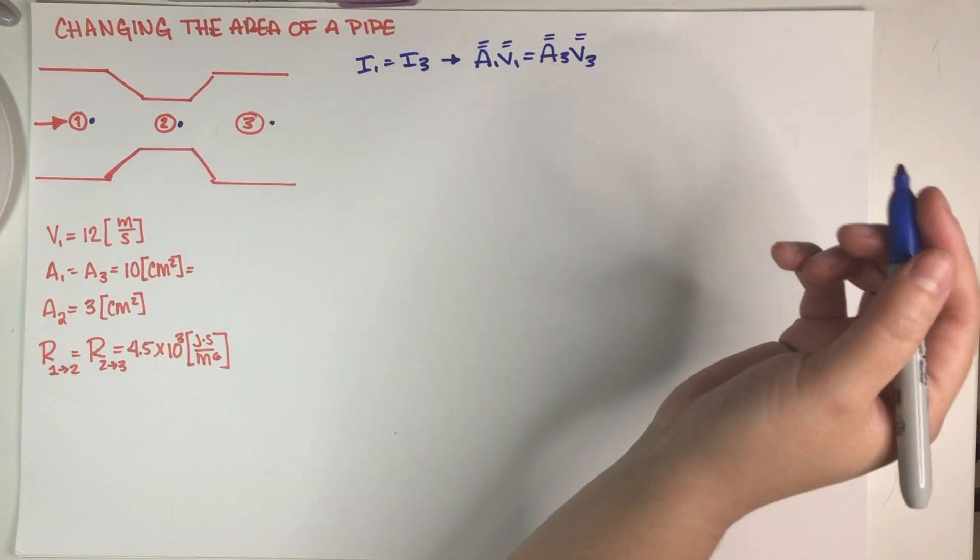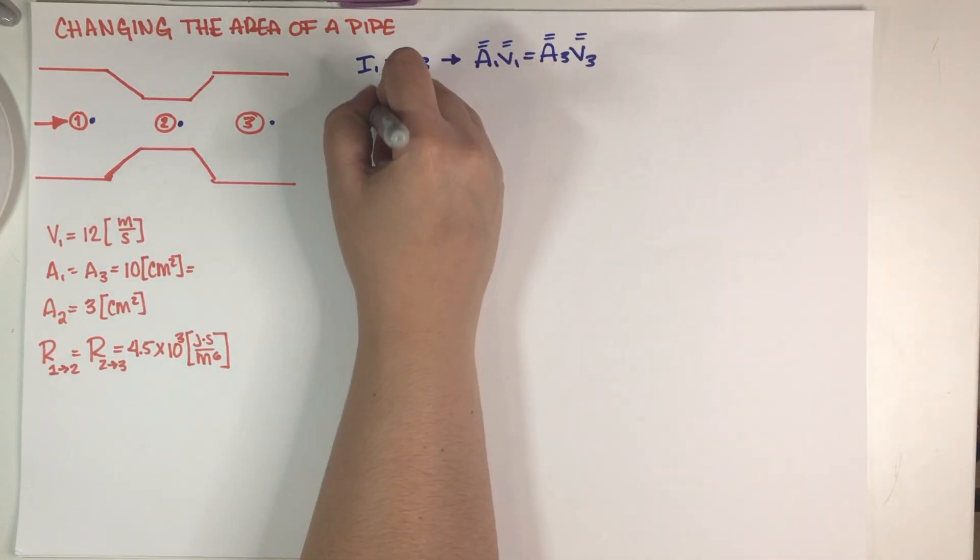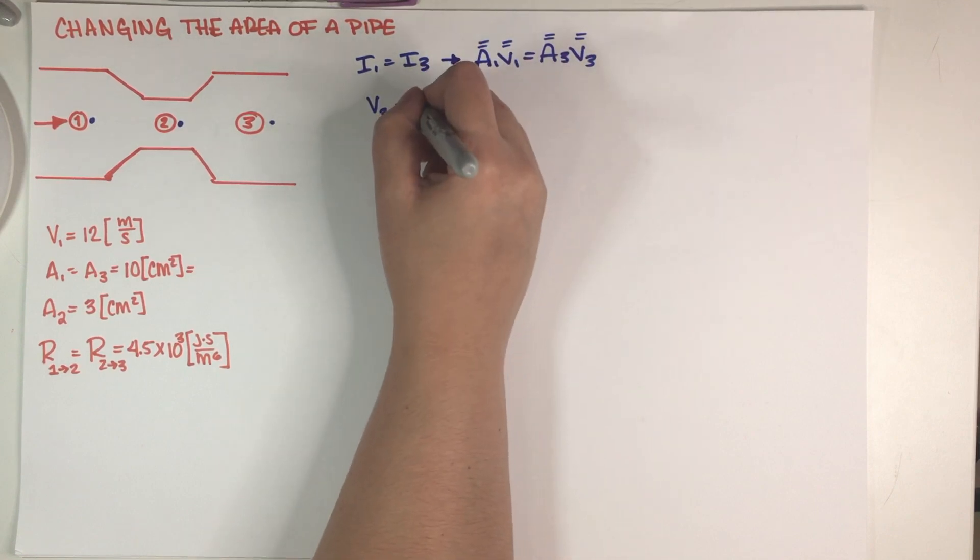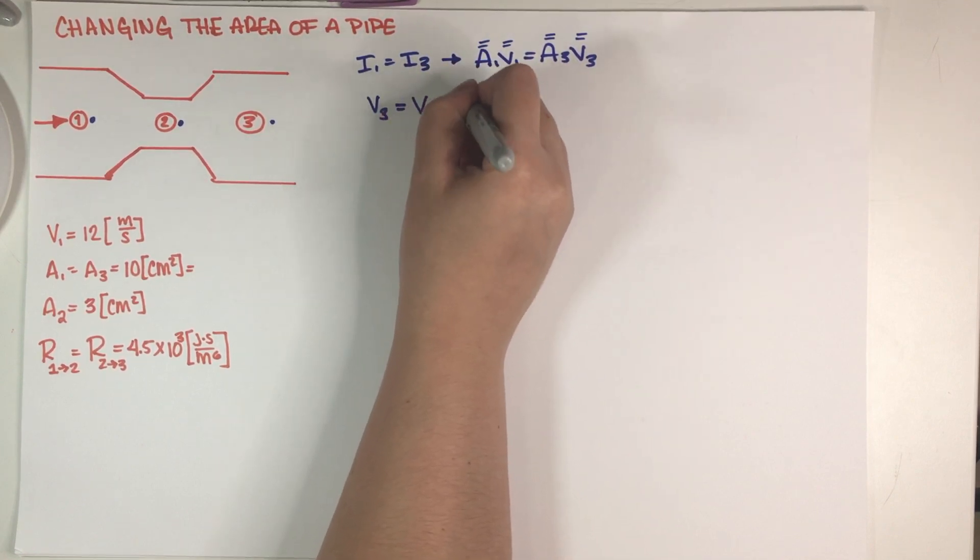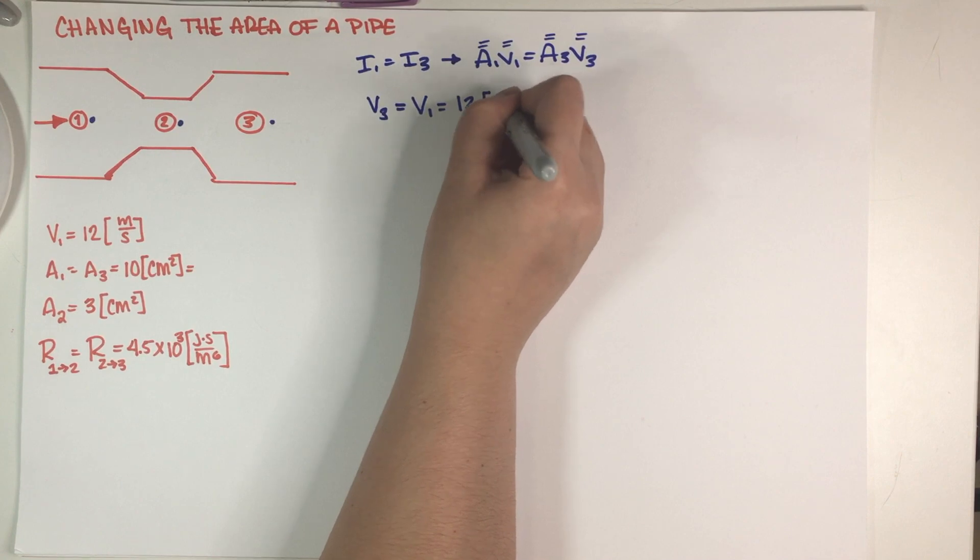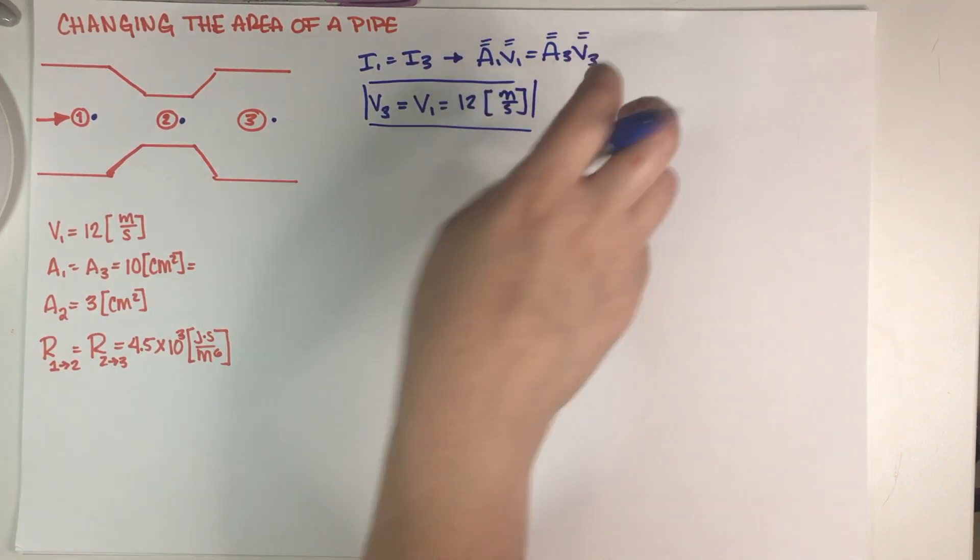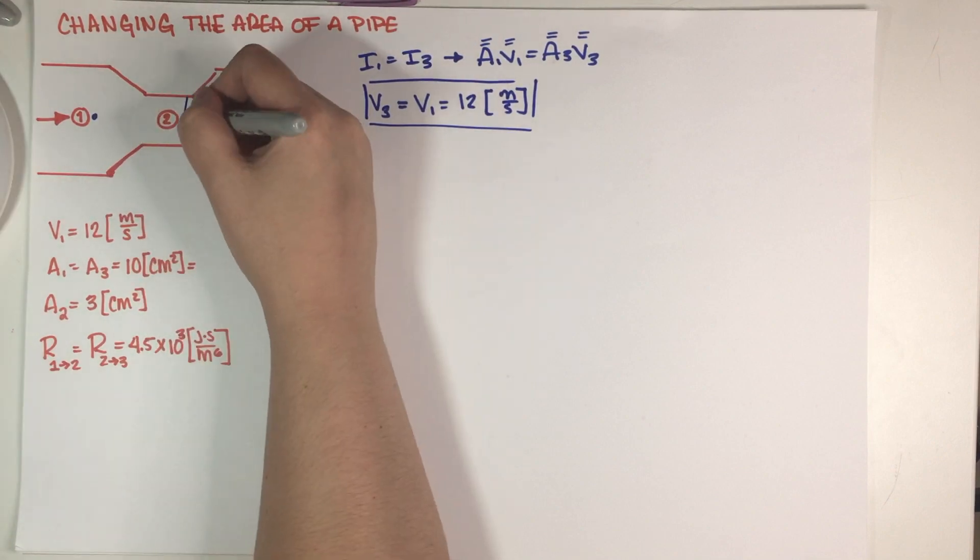So this is very straightforward and V3 is just, we don't really need to calculate anything, this is just 12 meters per second final answer. Now obviously this is not going to be as straightforward over here because we do have a change in area.